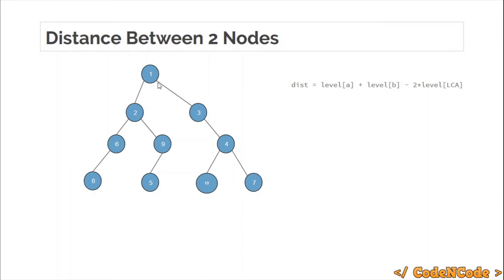While calculating the distance between seven and ten, you calculate the sum of level of A and B. Level of ten is three and level of seven is three as well, so the overall sum comes out to be six. But we see that in the distance between seven and ten, the two edges added because of level of A and level of B are of no use — these two edges are actually the distance from root, or level from root, to the LCA of these two nodes. So we remove these edges, and we have to remove them two times.